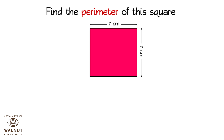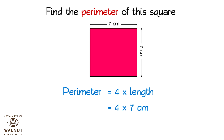Find the perimeter of this square. Let us use the formula. Perimeter of a square is 4 times the length — that is 4 into length. We know what the length is, so let us put that value in. Then we multiply: 4 into 7 cm. We get the perimeter: 28 cm.